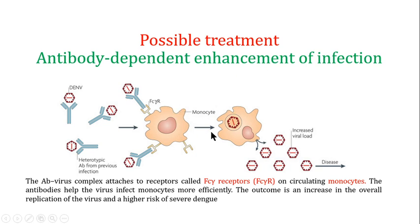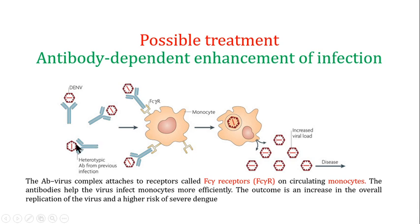I'll use dengue virus infection as an example. When a dengue virus infects an individual, the immune system makes antibodies against it. If that person is then infected by a different serotype of dengue, the antibodies produced against the first serotype will bind to this second serotype that has entered the body.